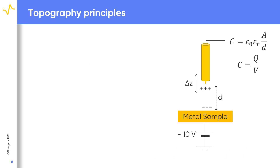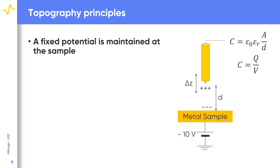In the standard SKP measurement, in order to measure the contact potential difference, the probe and the sample are connected and a variable bias is applied between them. In the SKP topography measurement, however, a constant potential is applied to the sample. This potential is typically minus 10 volts, although it can be set by the user anywhere from minus 10 to 10 volts. A different value would be used if the sample could be easily damaged by the high voltage applied.